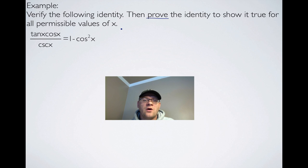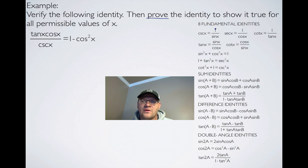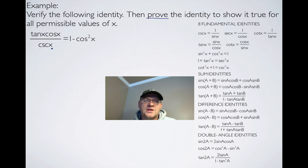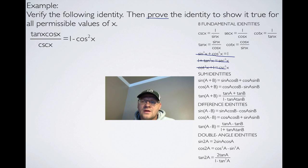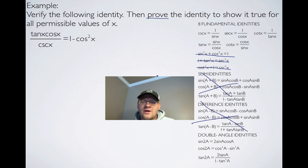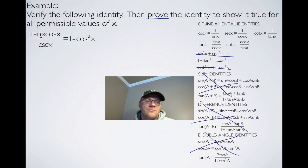Now to prove the identity algebraically, we need all our identities available. Looking at the left-hand side, which is more complicated, I don't see any squares so Pythagorean identities are less relevant; no sums or double angles. I'll make substitutions and convert to sine and cosine: tan x becomes sine x over cos x, and cosecant x becomes 1 over sine x. The cos x terms cancel, leaving sine x over 1, divided by 1 over sine x.